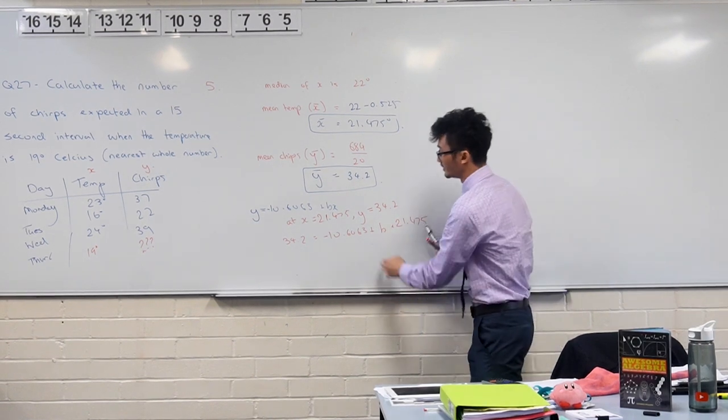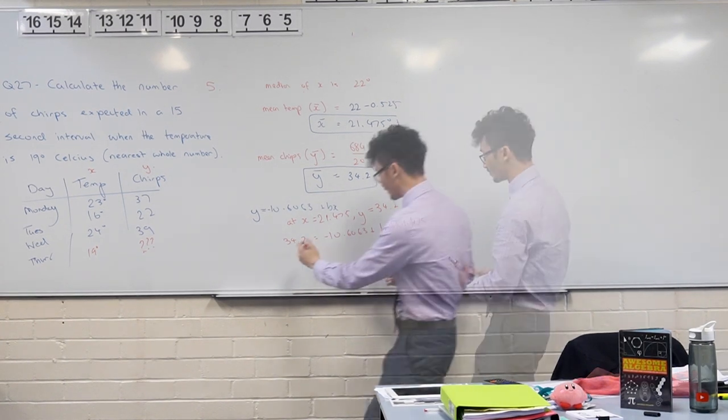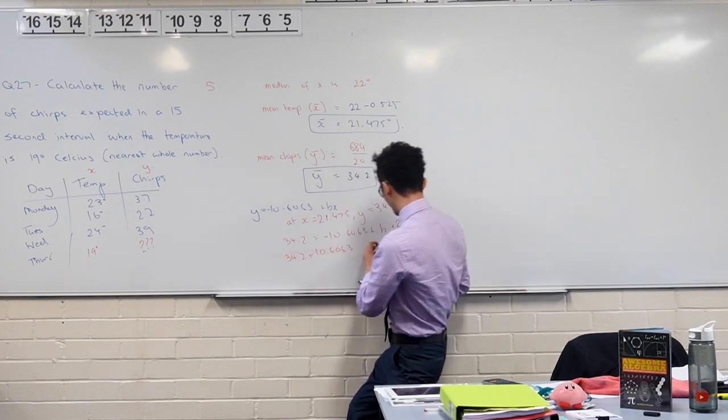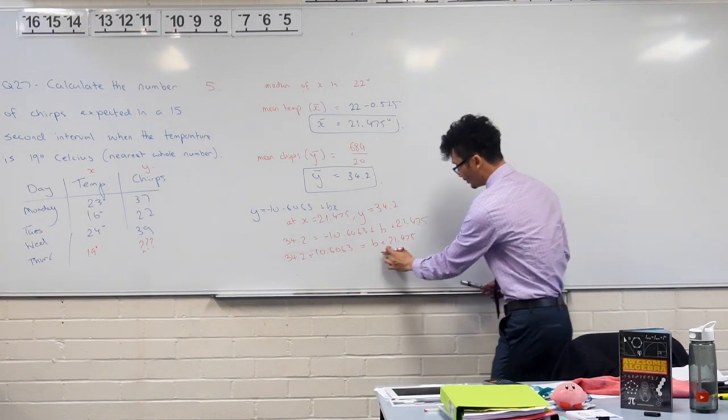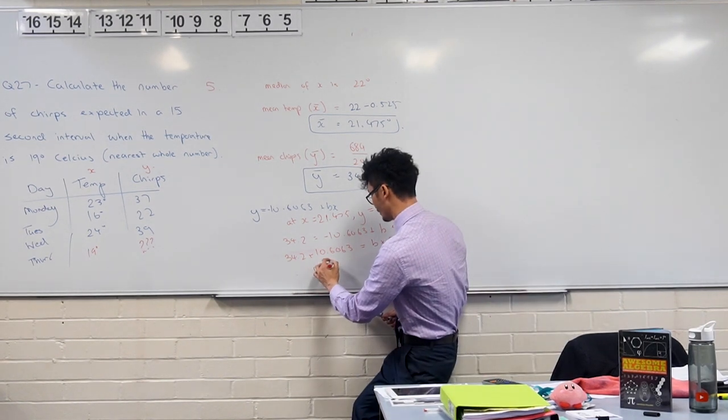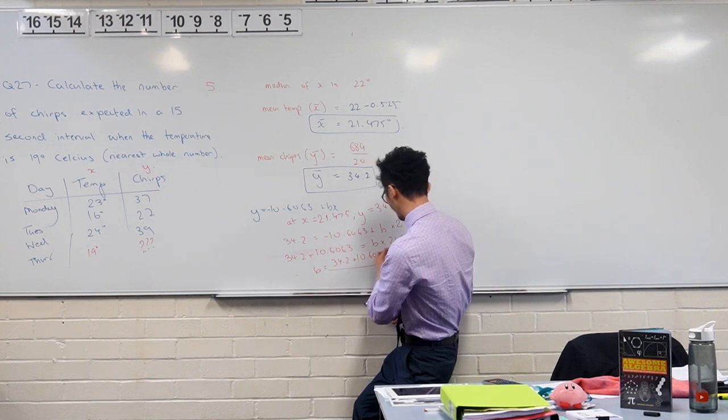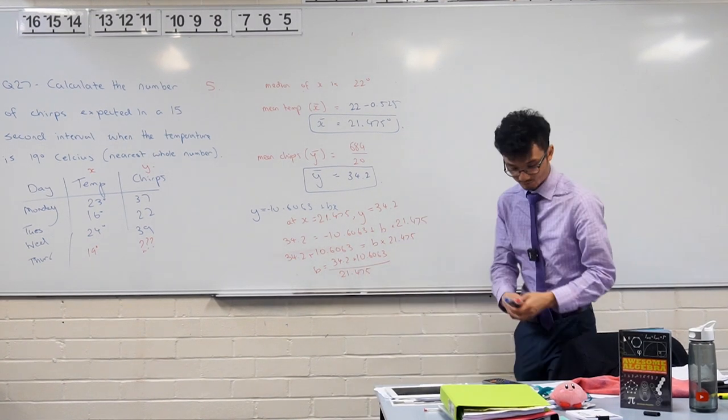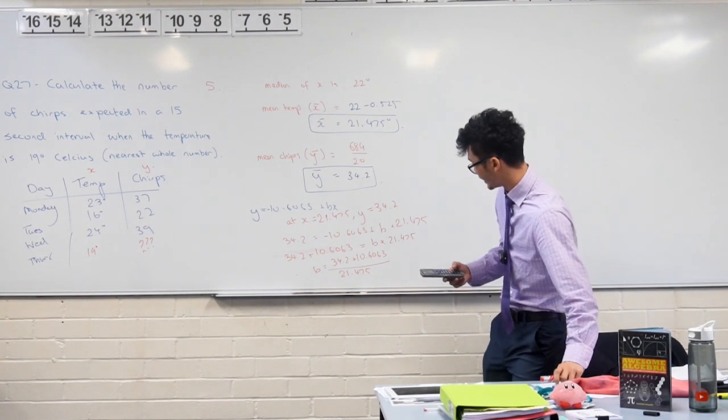And at this point, remember, what's the goal? The goal is to find what b is equal to. And b is simply going to be solved by rearranging this equation. So that's 34.2 plus 10.6063 is equal to b multiplied by this number. And we're getting there, can you see the last step? To find what b is, I can just think about my opposite operation. So I'll divide both sides by this. So b will equal to 34.2 plus 10.6063, all divided by 21.475. Okay, so just put all that into our calculator.